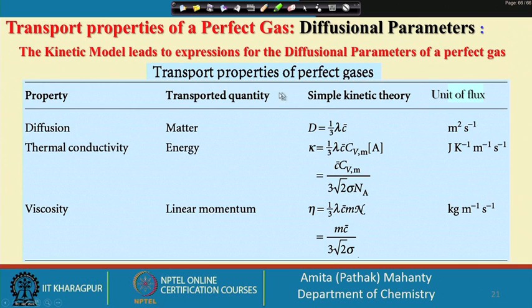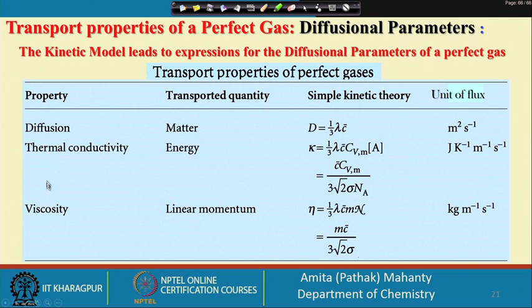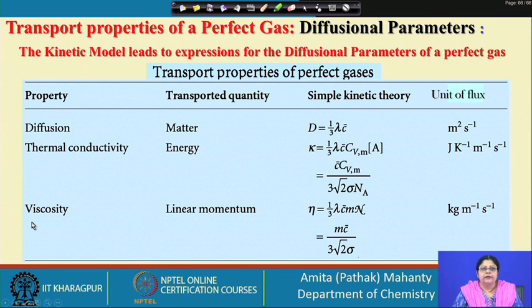Welcome to another lecture on Molecules in Motion. In the last class, we were discussing the transport properties of a perfect gas. What we had last seen were the diffusional parameters for various properties and how they get transported. These are the transport phenomena we had discussed: diffusion, thermal conductivity, and viscosity.